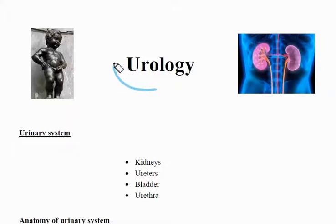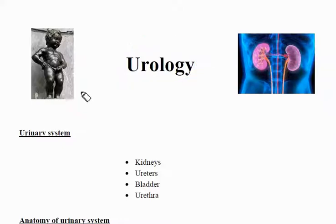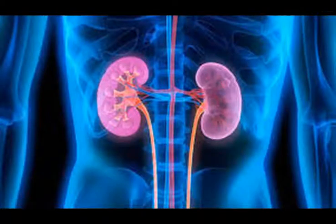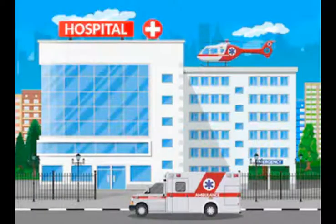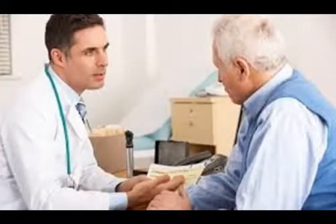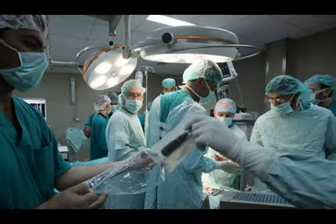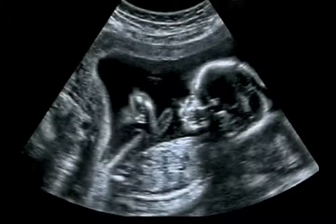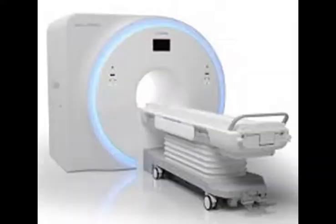If you have something wrong with your health, or just for a routine medical check-up, what should you do? You can go to a hospital and do your check. The easy one is to check your body fluid — blood and urine — to know the general conditions of your health. After that, you may take some images of specific parts of your body to see physical shape. This can be done by x-ray, ultrasound, CT, MRI, and so on.